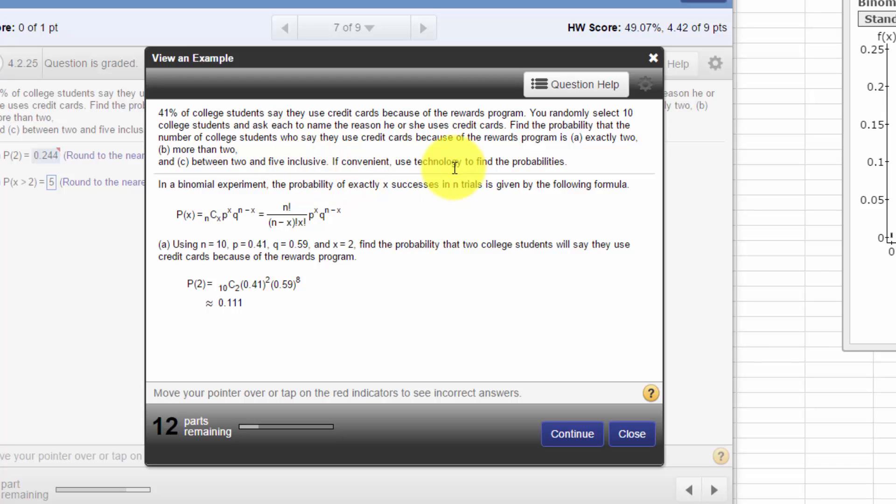It says if convenient, use technology, and bless your hearts, StatCrunch will make this much simpler and less painful to do. We know this is binomial because there's only two outcomes: either the student does or does not say they use credit cards.